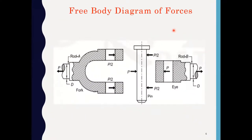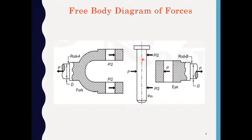This is the free body diagram of the various parts of the knuckle joint. This is your double eye or fork. The P load is acting on the joint and these are the reactions at the fork end: P/2 and P/2. This is the single eye, so P load is acting on rod B and this is the reaction acting at the single eye. The knuckle pin is divided into three parts: the upper part is in the fork end, the middle part is in the single eye, and the bottom portion is in the fork end.